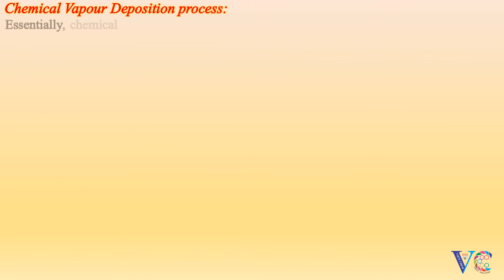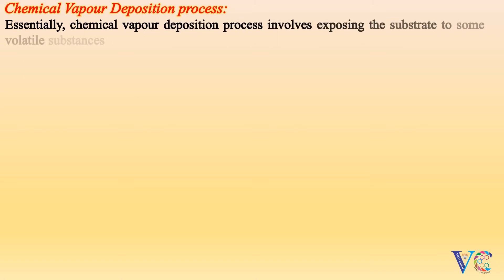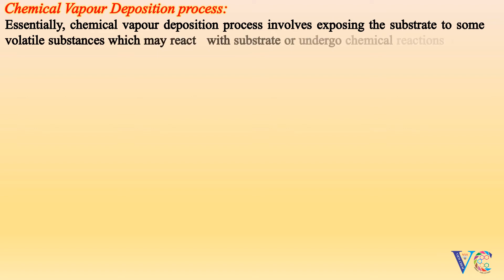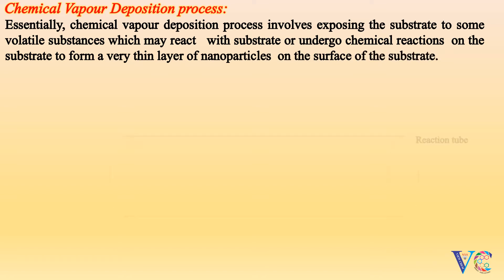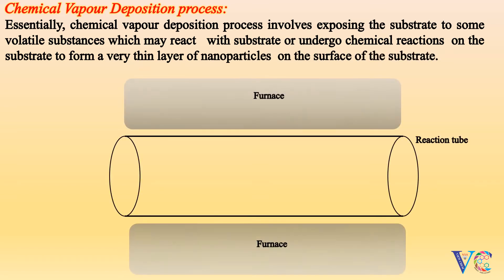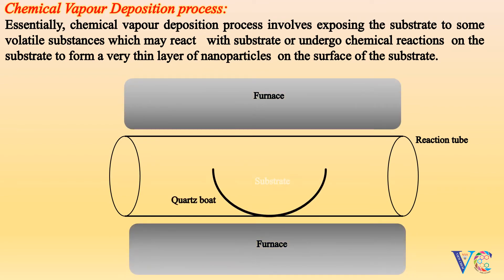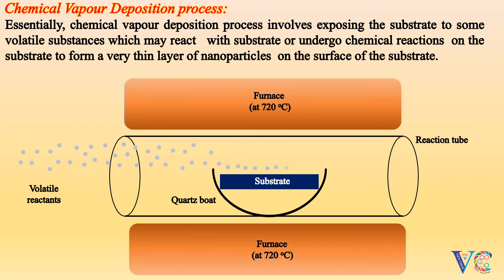The chemical vapor deposition process essentially involves exposing a substrate to some volatile substances, which may react with the substrate or undergo chemical reactions on the substrate to form a very thin layer of nanoparticles on its surface. A reaction tube is placed inside a furnace with a quartz boat holding the substrate. Volatile reactants are introduced and the furnace is heated to approximately 720 degrees centigrade, resulting in the formation of nanoparticles.